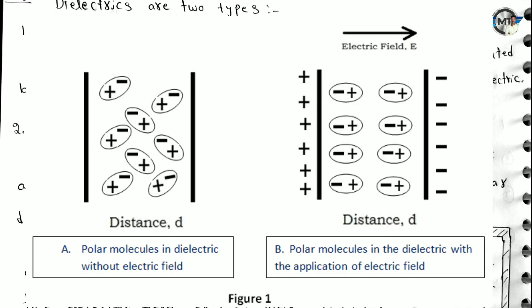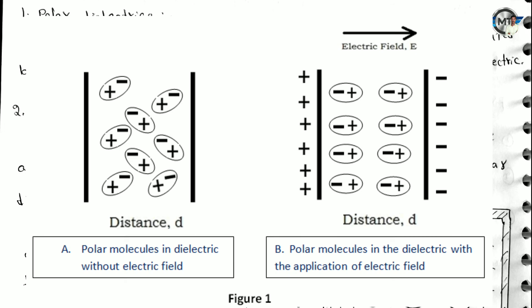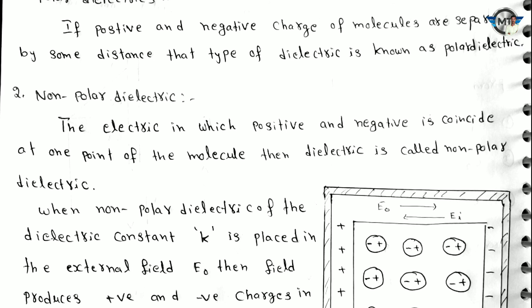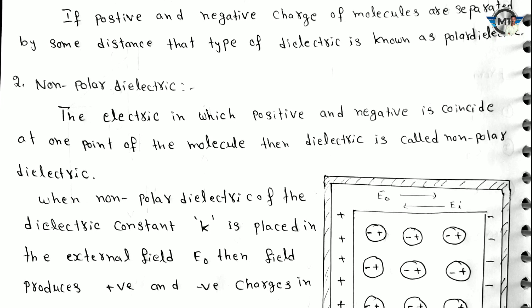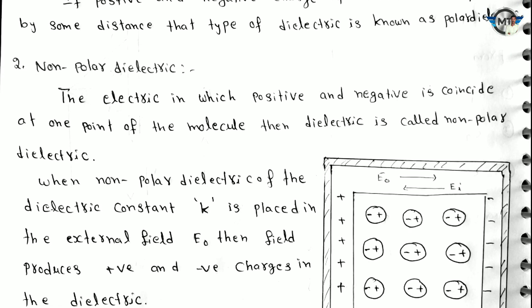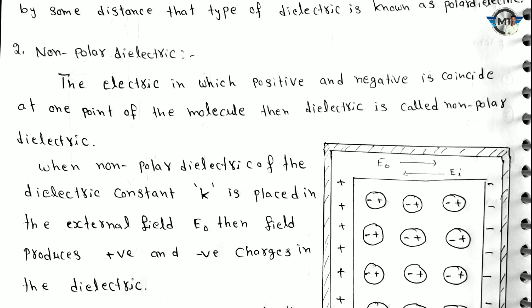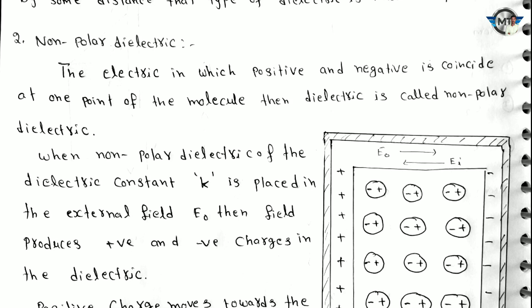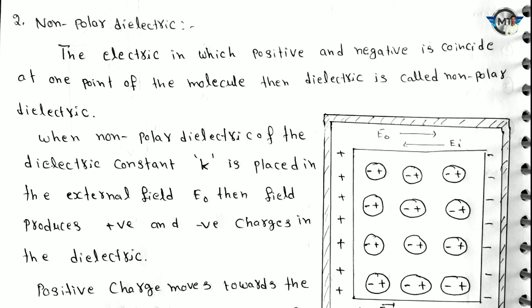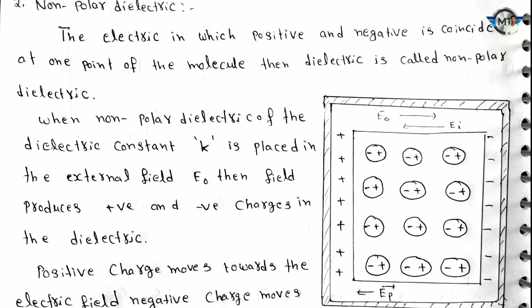Dielectrics are of two types. One is polar dielectrics and the second is non-polar dielectrics. In polar dielectrics, the positive and negative charges of molecules are separated by some distance. In non-polar dielectrics, the positive and negative charges coincide at one point of the molecule — that type of dielectric is called non-polar dielectric.